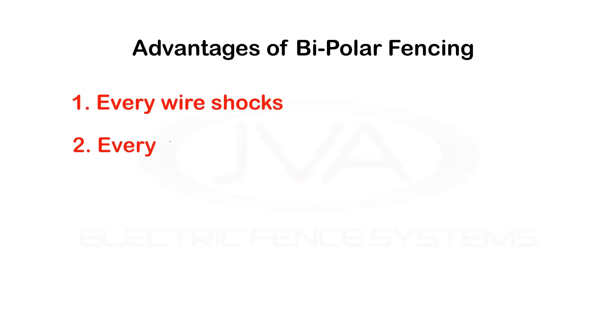Two: Every wire is monitored. Every wire has a pulse current flowing through it, meaning every wire can be monitored accurately for voltage drop and fence cut.